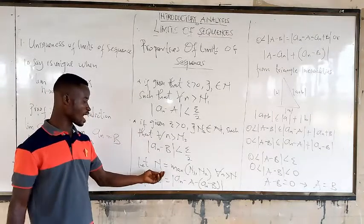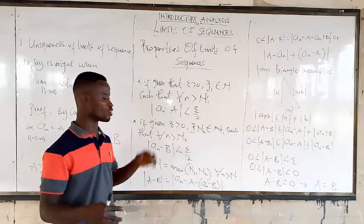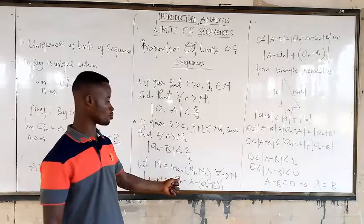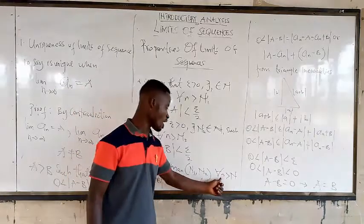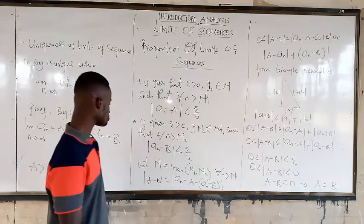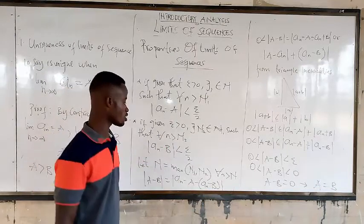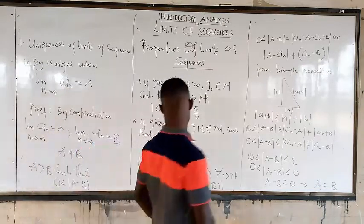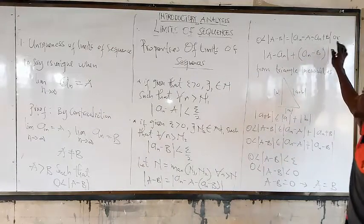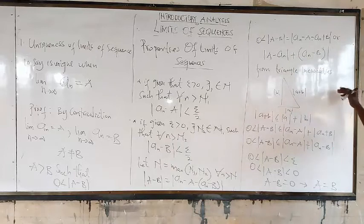This is for A and this is for B. The rest combined: capital N is equal to the max of N1 and N2. That means we are combining N1 and N2, and the maximum is greater than maximum. Where all N is greater than N, therefore this is equal to that. We have that, and that's all from triangle inequalities.